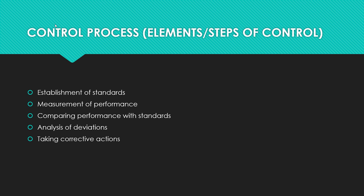Fourth step: analysis of deviations — not all deviations need to be brought to top management's notice. When deviation is beyond the prescribed limit, an analysis is made to identify causes, and these are reported to managers who take necessary corrective action. Fifth step: taking corrective actions — variations are reported to management, which takes corrective actions and remedies. This can be by revision of standards, change in assignment of tasks, training of employees if they need more training, and improvement in the technique of direction.